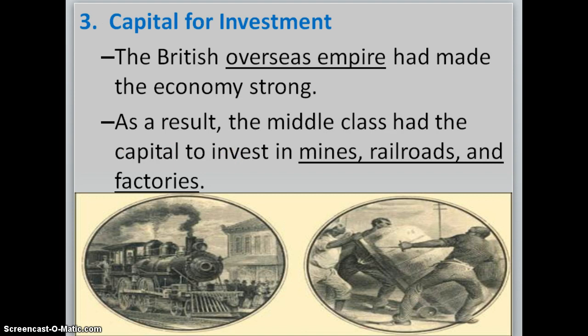Another cause of the Industrial Revolution was that people had money. You can't invest in big businesses and new ventures without it. This money was called capital. The British Overseas Empire, through imperialism, had a very strong economy — making money from land and people in Southeast Asia, Africa, and India. As a result, the middle class had a lot of extra money to invest in factories, mines, and railroads, hoping to make even more money in the future.